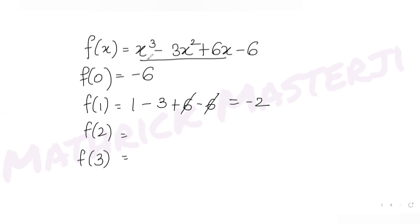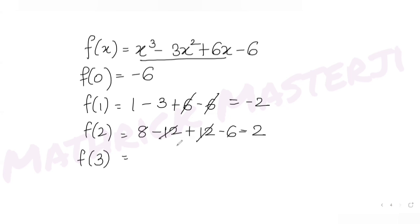For x = 2: 8 − 12 + 12 − 6 = 2. The 12s cancel, leaving 8 − 6 = 2, so f(2) = 2.